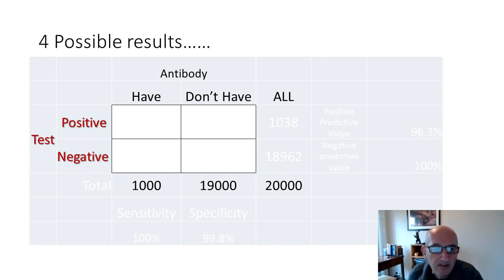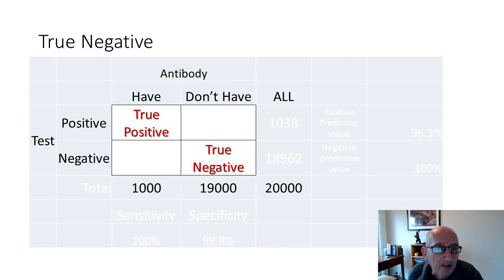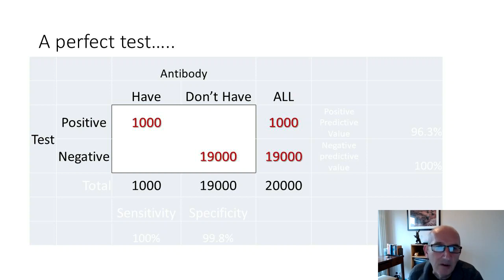We can test somebody and find that their test is positive in somebody who does indeed have antibodies. We can test somebody and find they're negative in somebody who doesn't have antibodies. That's what you'd expect and hope to happen all of the time, and in a perfect test that's exactly what would happen. In this population with 1,000 people who have antibodies and 19,000 who don't, you'd get 1,000 positive tests for those with antibodies and 19,000 negative tests for those without.